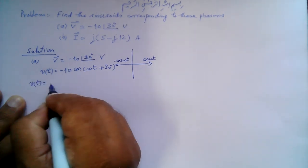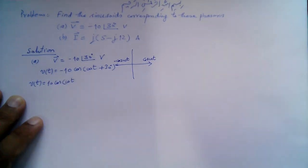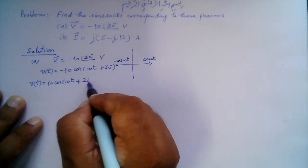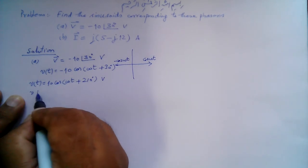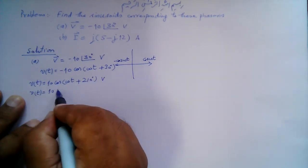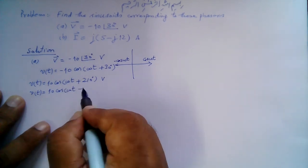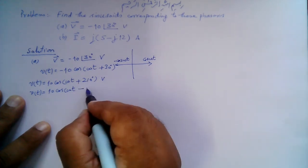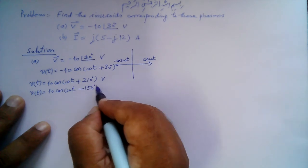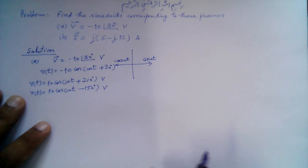So V(t) equals 10 cosine(ωt). If we add 180 degrees to 30, this becomes 210 degrees. Alternatively, if we subtract 180 from 30, that gives us 10 cosine(ωt minus 150 degrees). Both these sinusoids are equivalent.